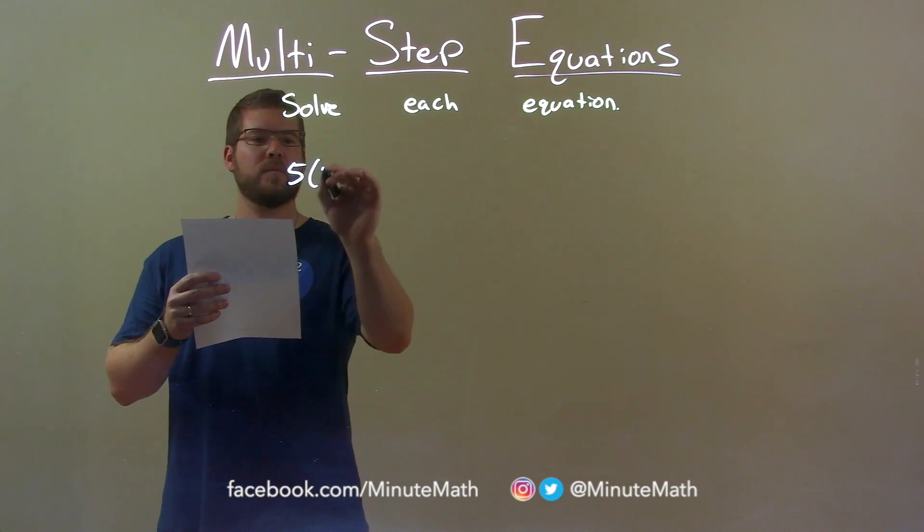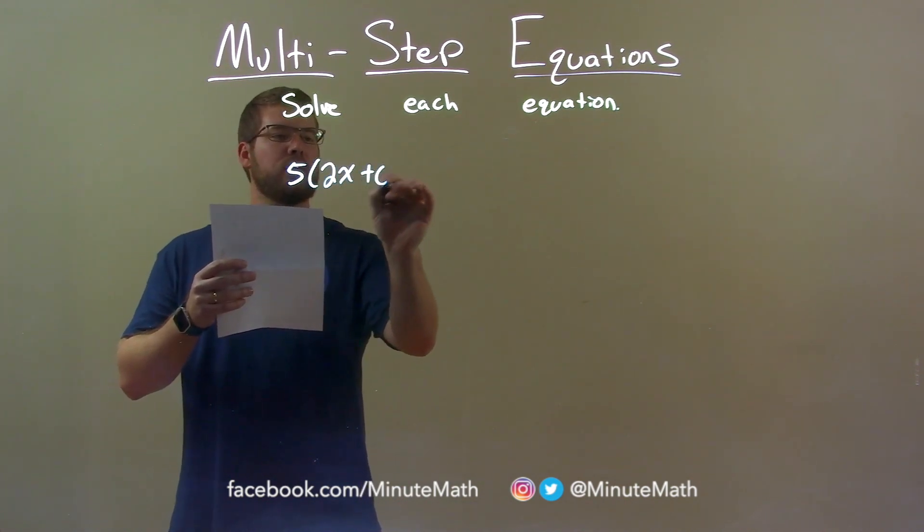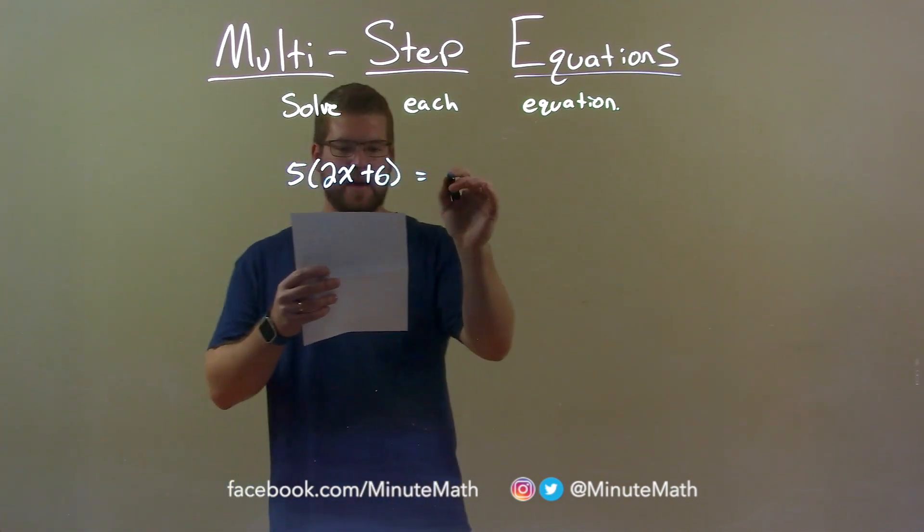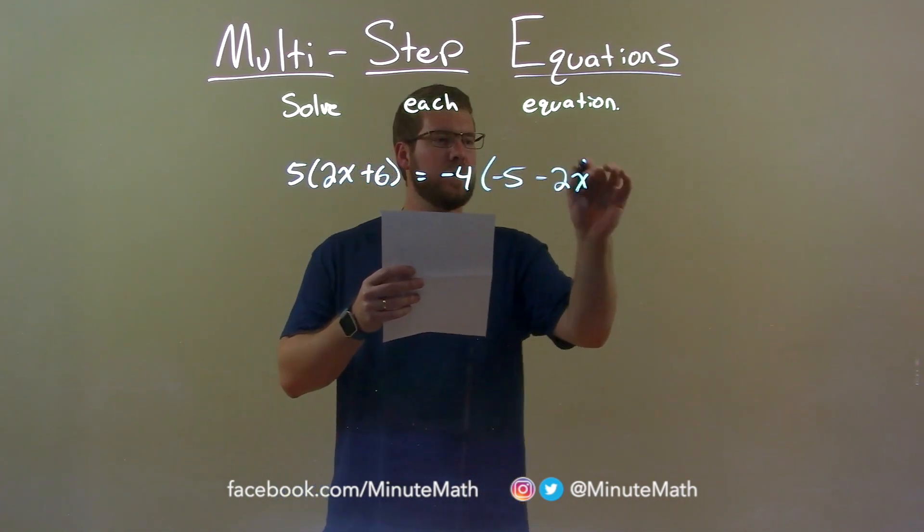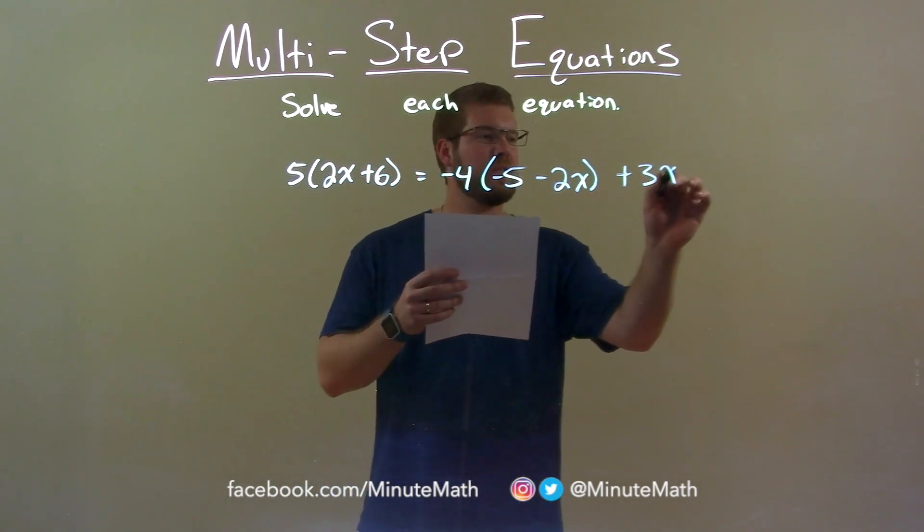5 times 2x plus 6 equals negative 4 times negative 5 minus 2x, then plus 3x on the right.